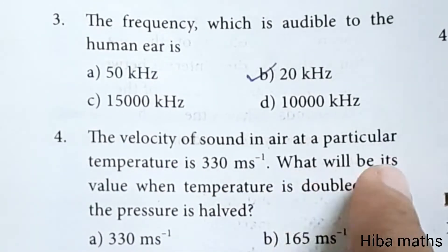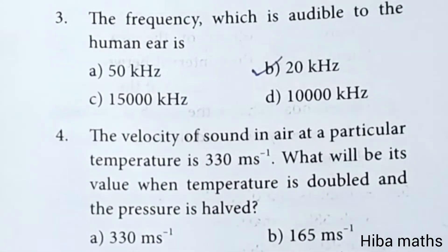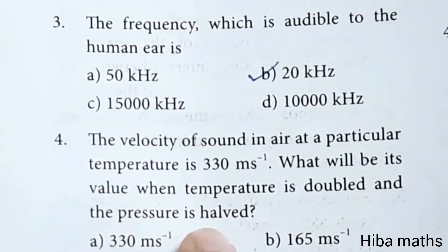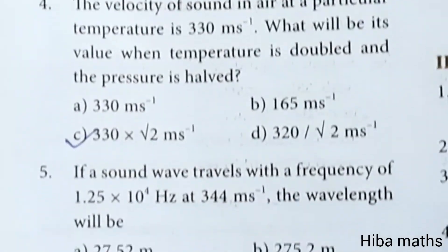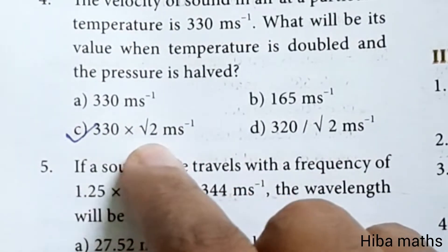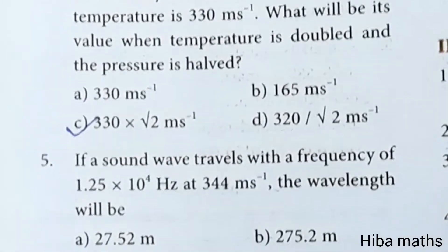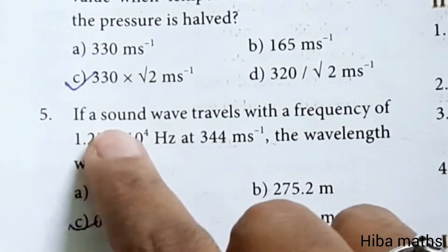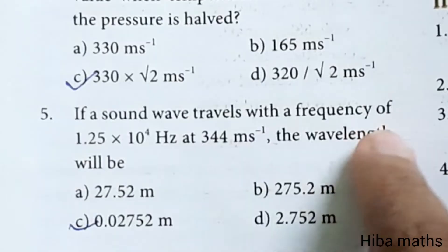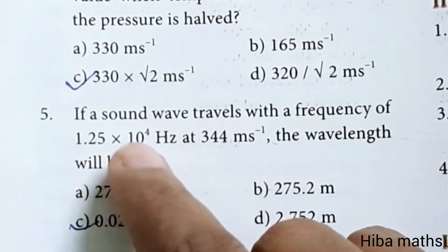What will be its value when temperature is doubled and the pressure is halved? The value in air is 330 into root 2 meter per second. Fifth question: if a sound wave travels with a frequency of 1.25 times 10 power 4 hertz at 344 meter per second, the wavelength will be 0.02752 meter.